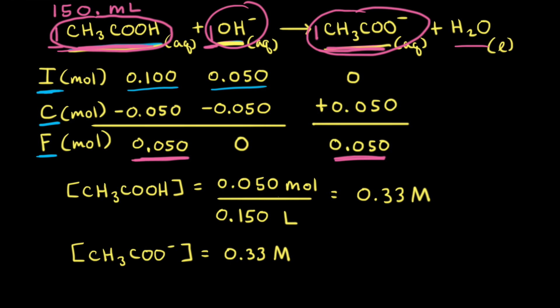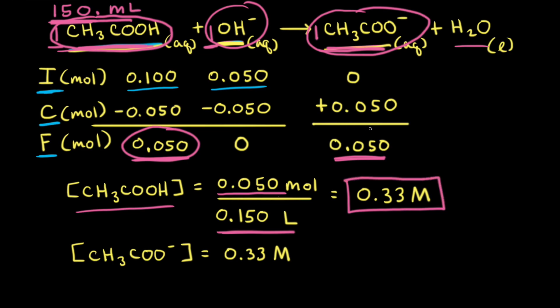Our goal was to calculate the pH of this buffer solution, so first we need to calculate the concentrations of acetic acid and the acetate anion. To find the concentration of acetic acid, we take 0.050 moles and divide by the total volume of 0.150 liters, giving 0.33 molar. For the acetate anion, we also have 0.050 moles divided by 0.150 liters, so the concentration of the acetate anion is also 0.33 molar.